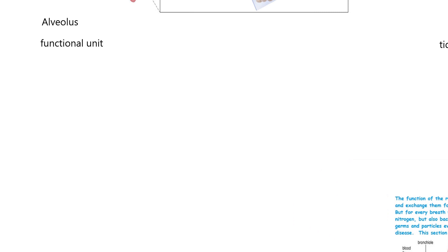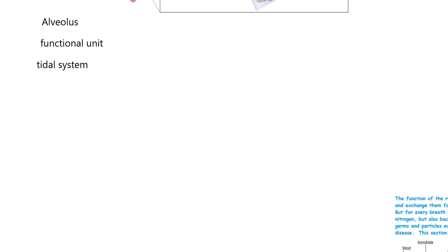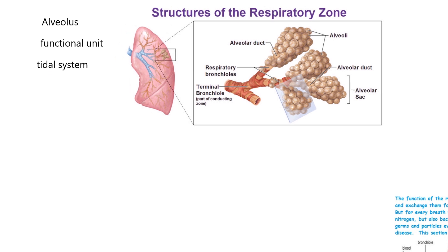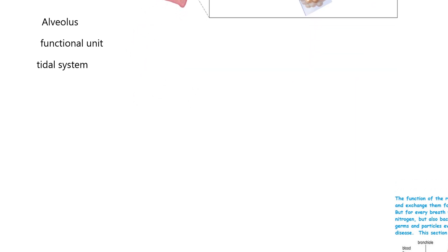The alveolus is the functional unit. This is where oxygen diffuses out of the lumen of the alveolus into the red blood cell, and then carbon dioxide has just the opposite. When you look at these alveoli, it's called a tidal system where air comes in - it's a dead end system, and the air has to move back out the same path, kind of like a tide on a beach. So it's called a tidal system. As a point of contrast, birds don't have a tidal system.